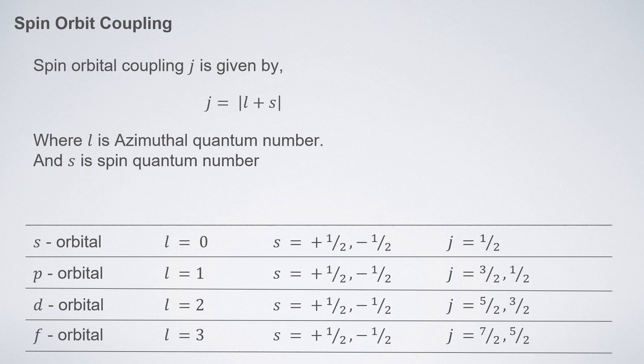You can see that for higher orbitals like p, d, and f, there are two values of j, and therefore the peak splits into two parts. For s orbitals, only one value of j is available, and therefore they don't show any peak splitting — they are always singlet.